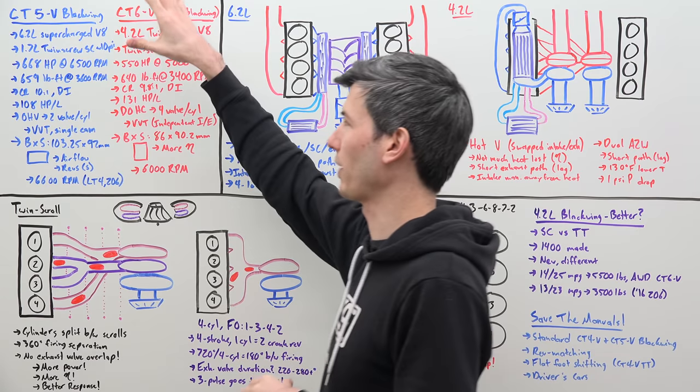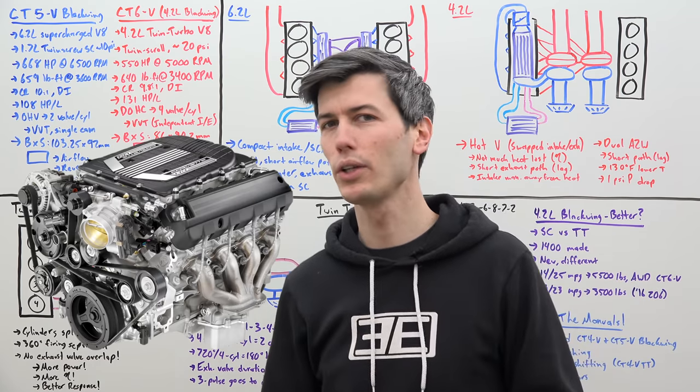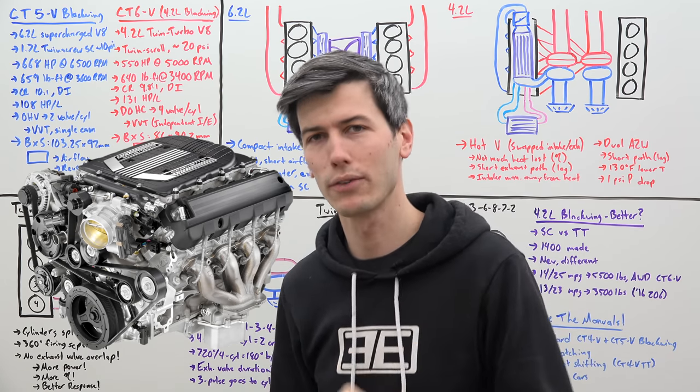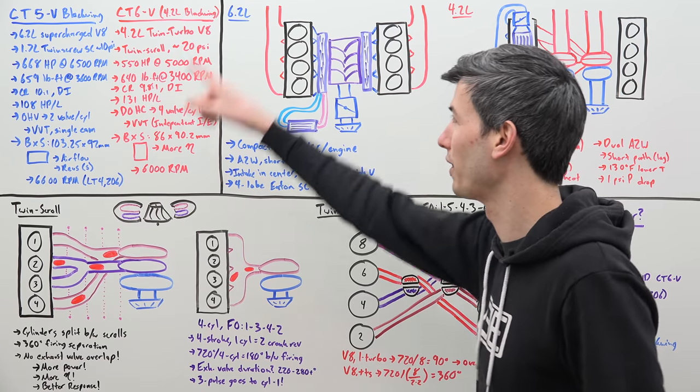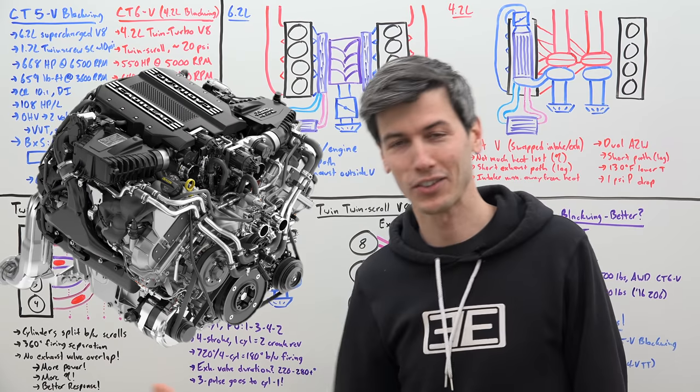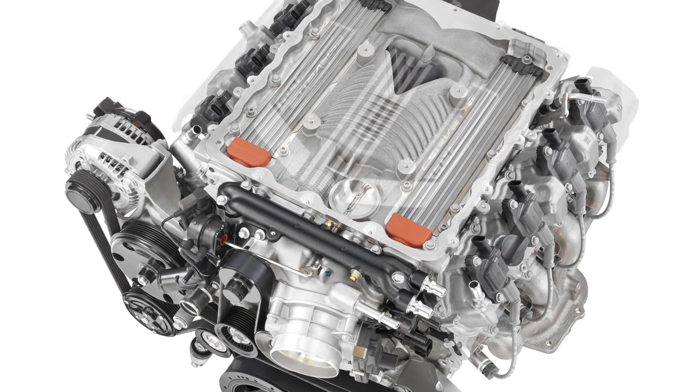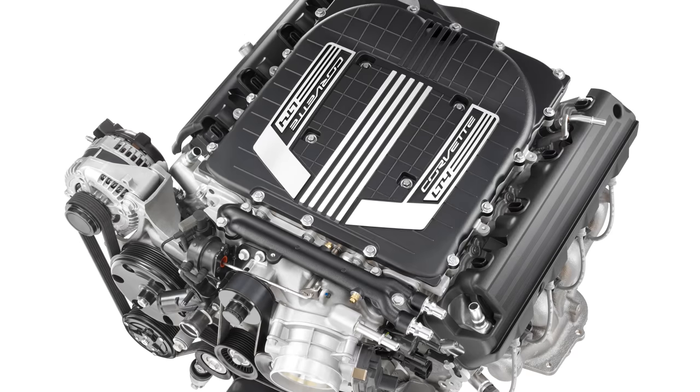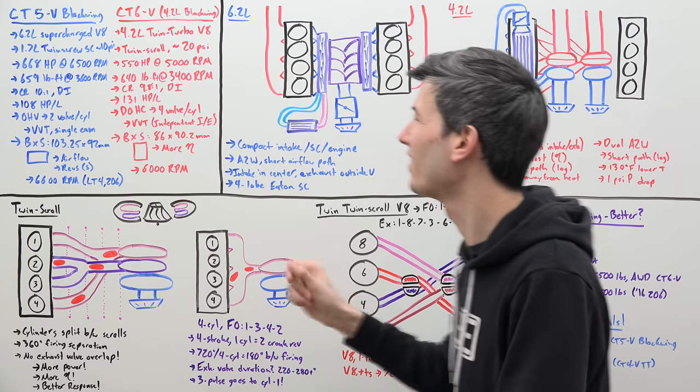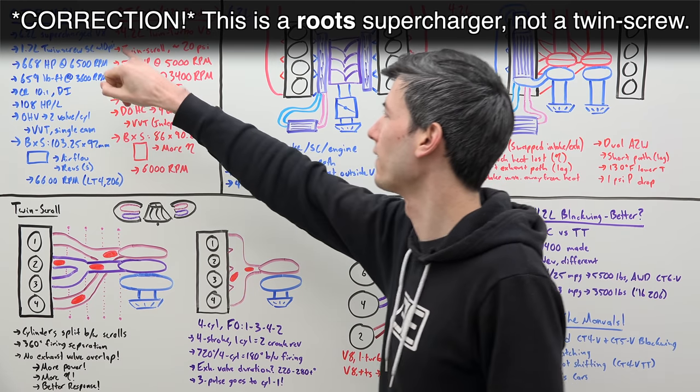So let's start off with specifications starting with the CT5V Blackwing. This has a 6.2 liter supercharged V8, which is based on the LT4 engine, which came out in the 2014 Corvette Z06. The CT6V with the 4.2 liter Blackwing came out in 2019, five years later. However, it is no longer in production. So now we're looking at a new variant of the LT4 engine, which came out quite a while ago. This is a 6.2 liter supercharged V8 with a 1.7 liter twin screw supercharger, about 10 psi.